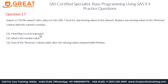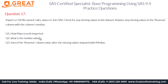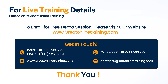So we have answered all three questions: how many records are imported — 5 records; what is the median value — 1500; and what is the sum of the revenue column after missing values are imputed with the median — 7800. I hope this question walkthrough is helpful. Please let me know if you have any comments or questions.